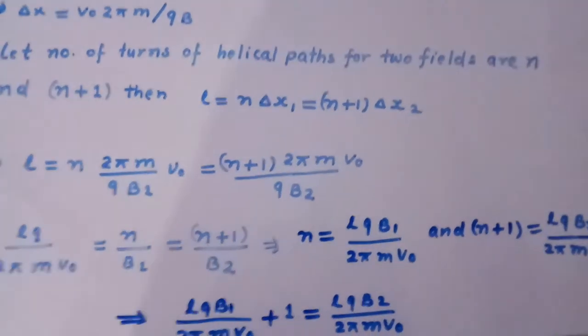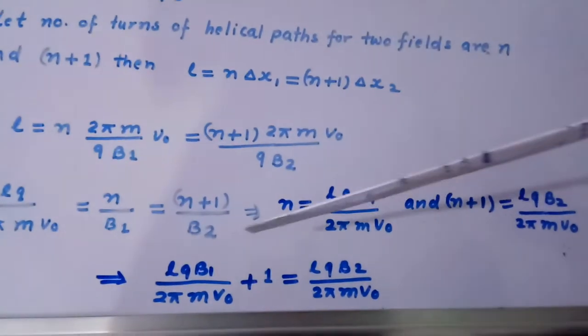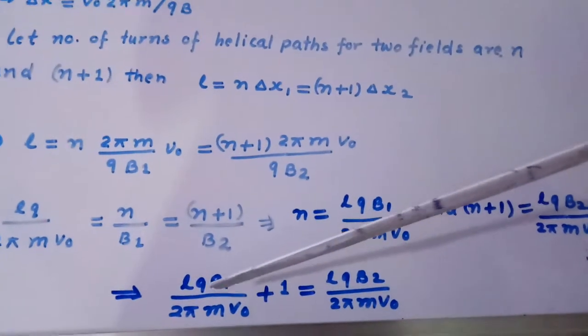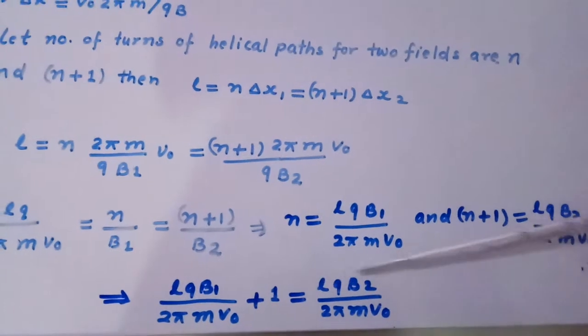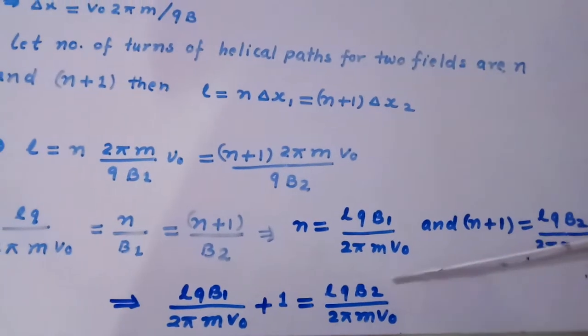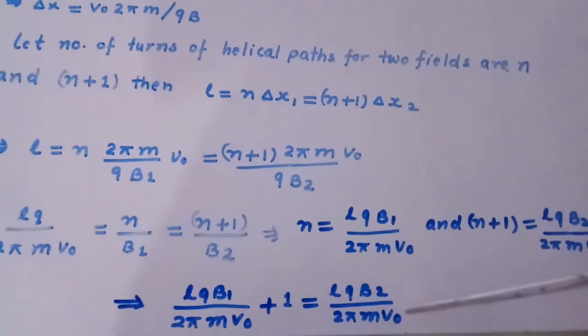Which further simplifies to LQB1 divided by 2 pi M V0 plus 1 equal to LQB2 divided by 2 pi M V0.